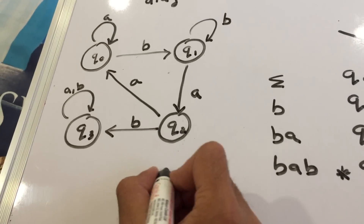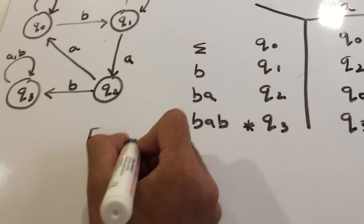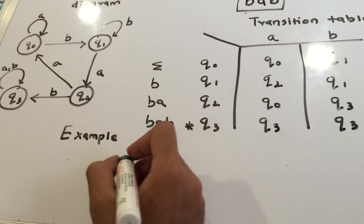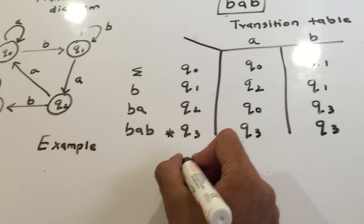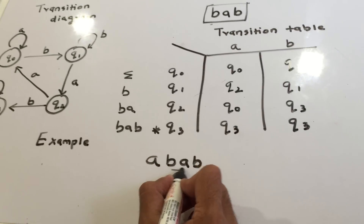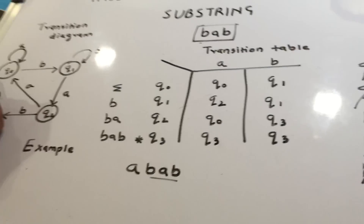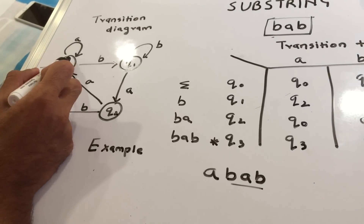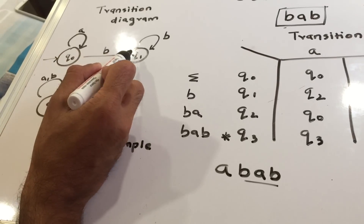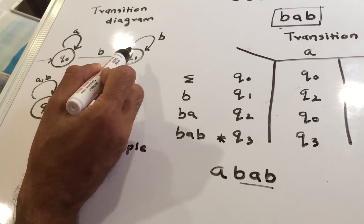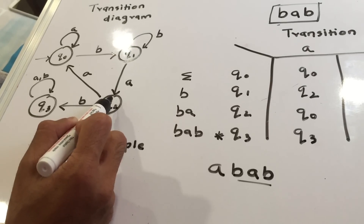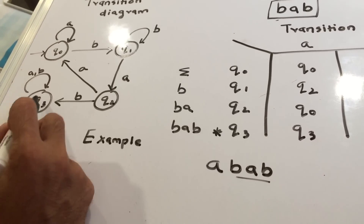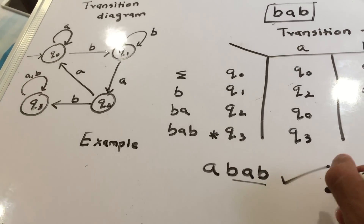Let's consider a string containing 'bab' — for example, 'ABAB'. Starting at q0: get 'a' → stay q0; get 'b' → go to q1; get 'a' → go to q2; get 'b' → go to q3. Since q3 is our final state, we accept the string. So 'ABAB' gets accepted.